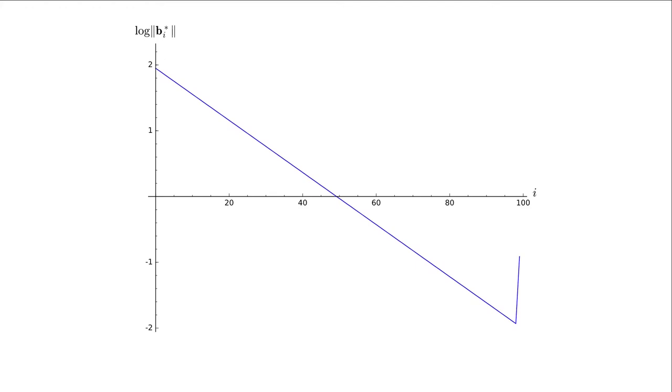So what we can do instead is we can apply such an operation to a projected sub-block of the basis. So we can, for example, pick out this block and then apply an SVP oracle to the smaller dimensional lattice. And this might turn the basis into a shape that looks like this. And similarly if we apply the same operation in the dual. And now the basic idea of block reduction is simply to apply these two operations in certain orders in order to improve the shape of the basis overall. Like apply this local operation to improve the basis globally.